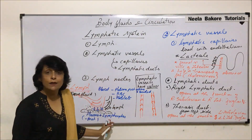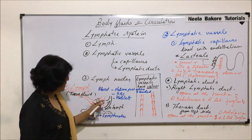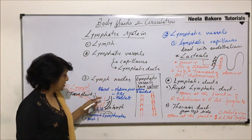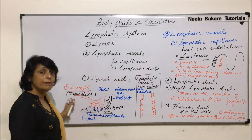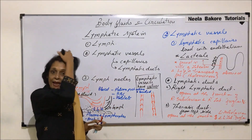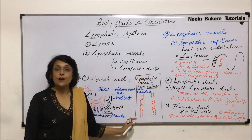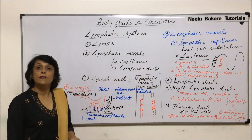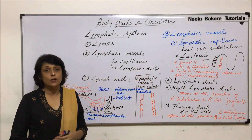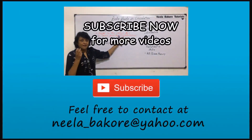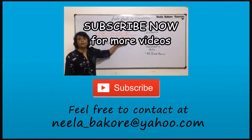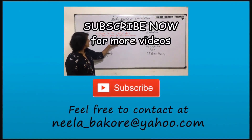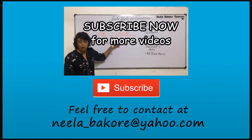So now we know how the lymph is formed, why it is known as tissue fluid — because it is formed in the tissue — and the vessels which connect this lymph back to circulation. Now we have to discuss the lymph nodes.